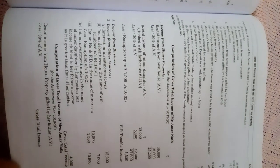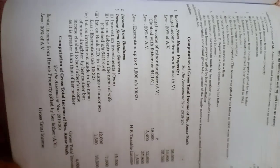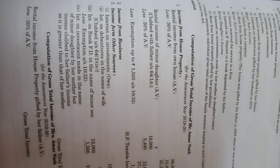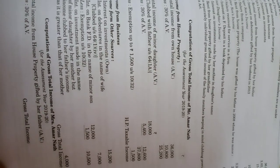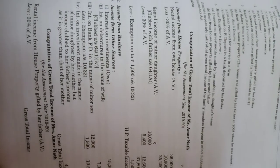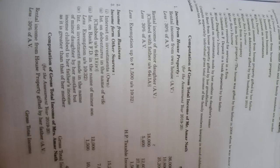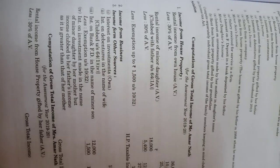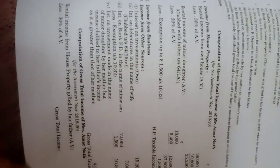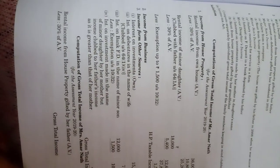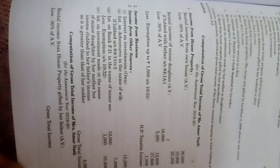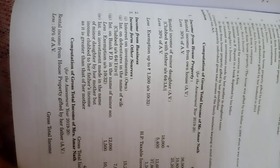The rental income of minor daughter is clubbed with the father as per Section 64(1A) and the income is ₹12,600. For each minor child a deduction of ₹1,500 is given — less exemption up to ₹1,500. So we get two deductions: ₹1,500 for the minor daughter and ₹1,500 for the minor son.